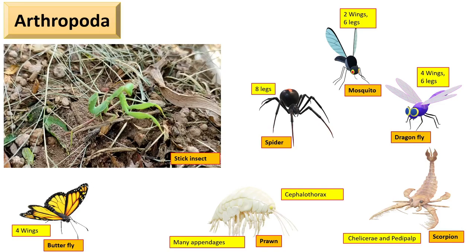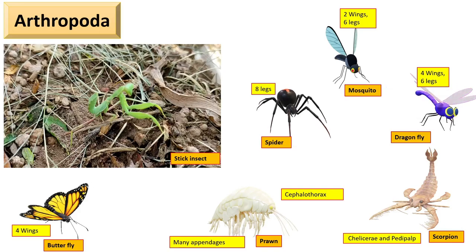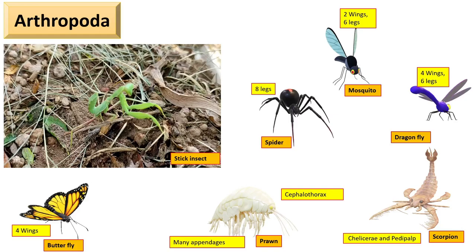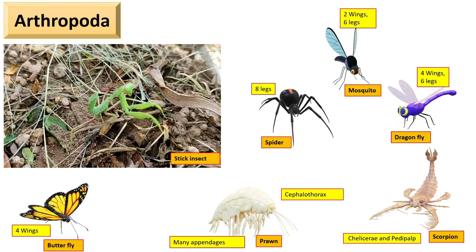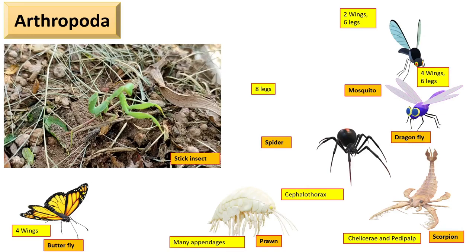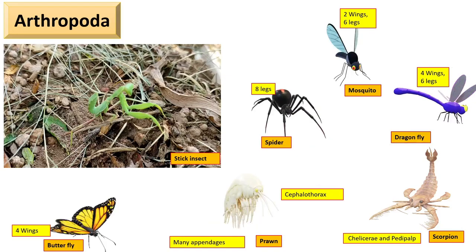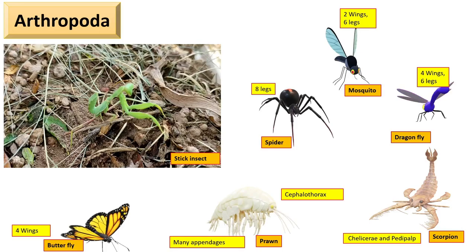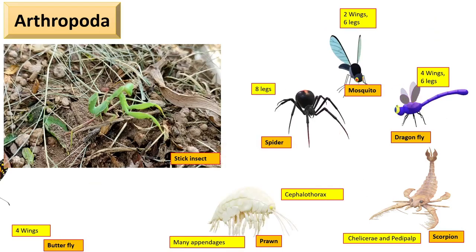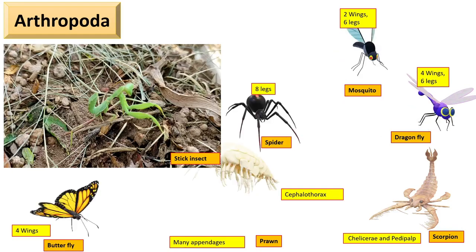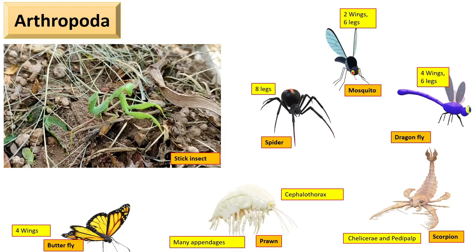Arthropoda is the phylum with the highest number of animals. Arthropods are the most successful and well-adapted group, present everywhere: land, soil, water, fruits, air, even at the top of mountains and the great depths of oceans. These animals have a unique feature: their appendages are jointed. The body is divided into head, thorax, and abdomen, or cephalothorax and trunk. The body is covered by a hard chitinous cuticle which is shed periodically for growth; this process is called ecdysis.